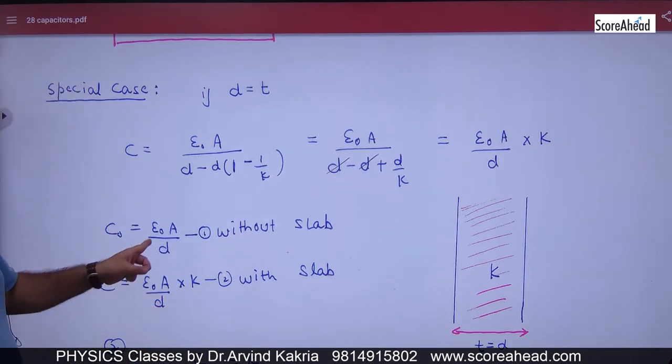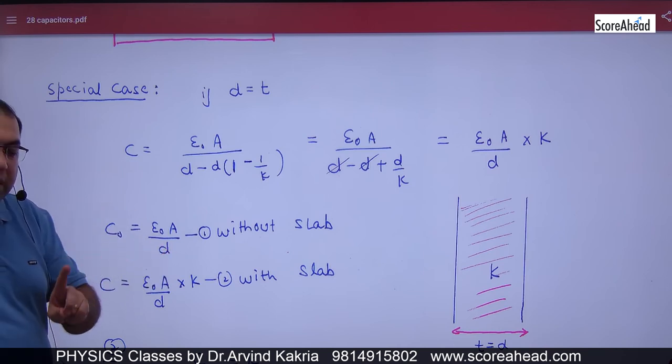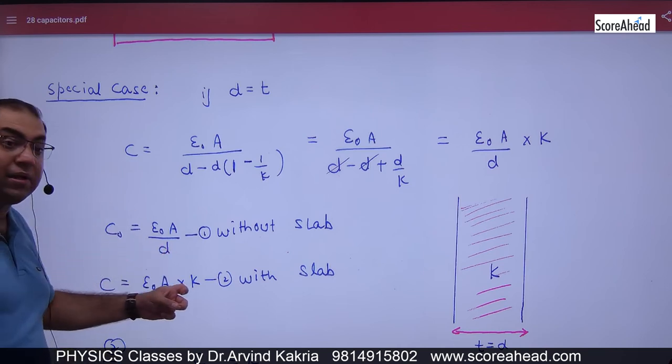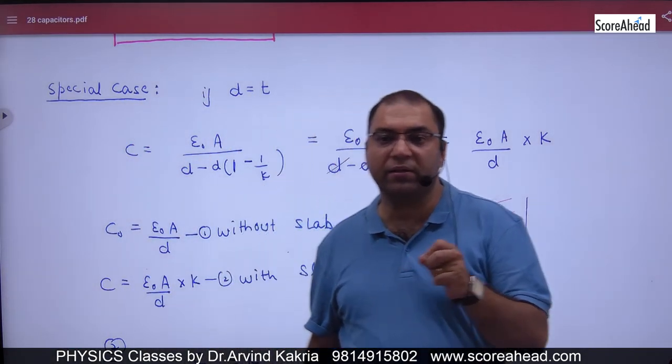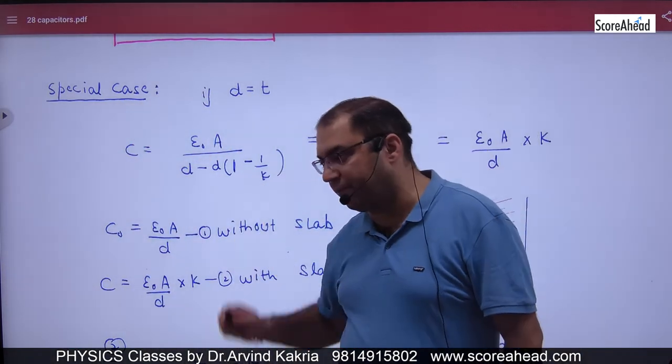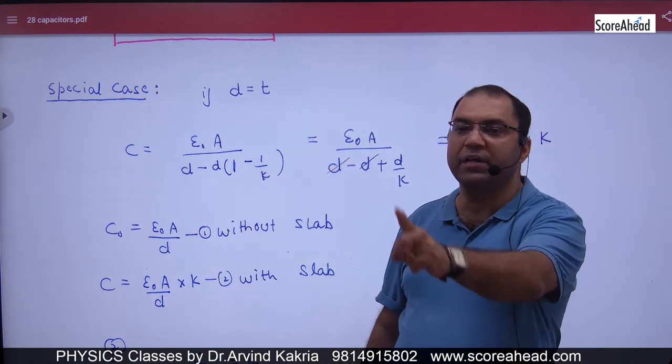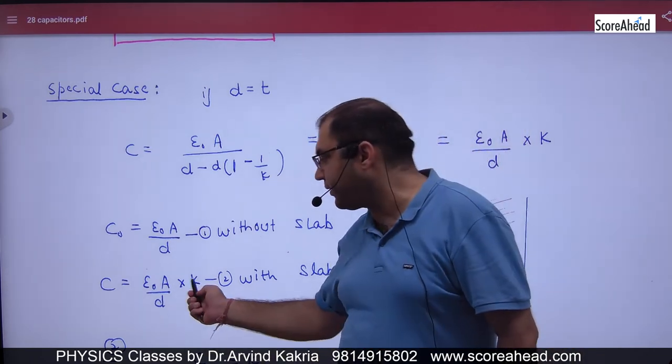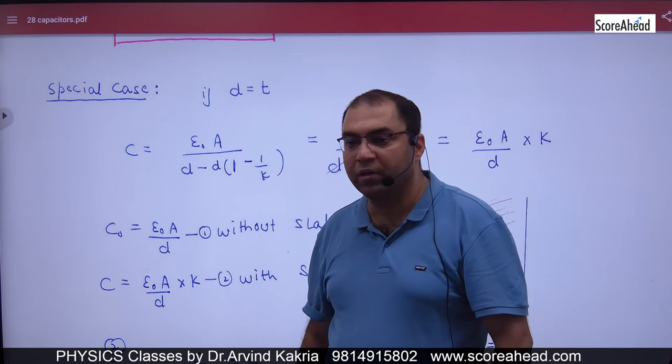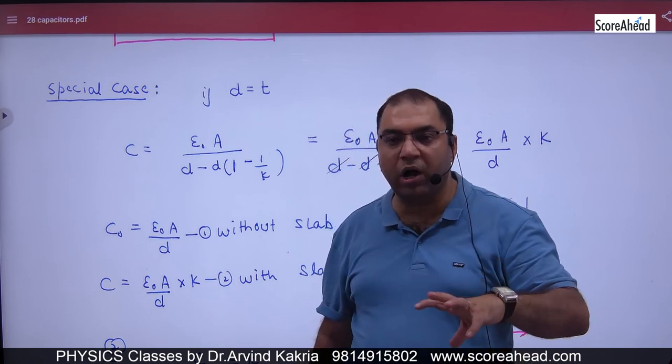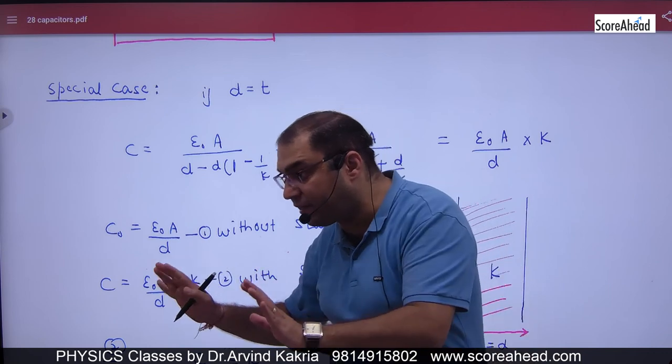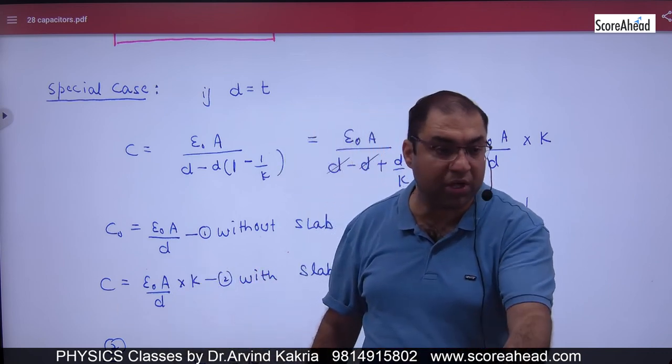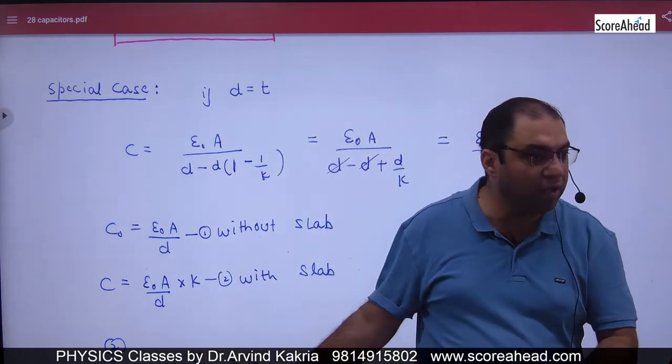Without the slab, this is the capacitance. With dielectric, the capacitance will become K times. Think about it. Without the slab, the capacitance is 10 microfarad. You have such a material, dielectric, with dielectric constant value 80. When you add that material to the capacitor, your capacitance will become 80 times.